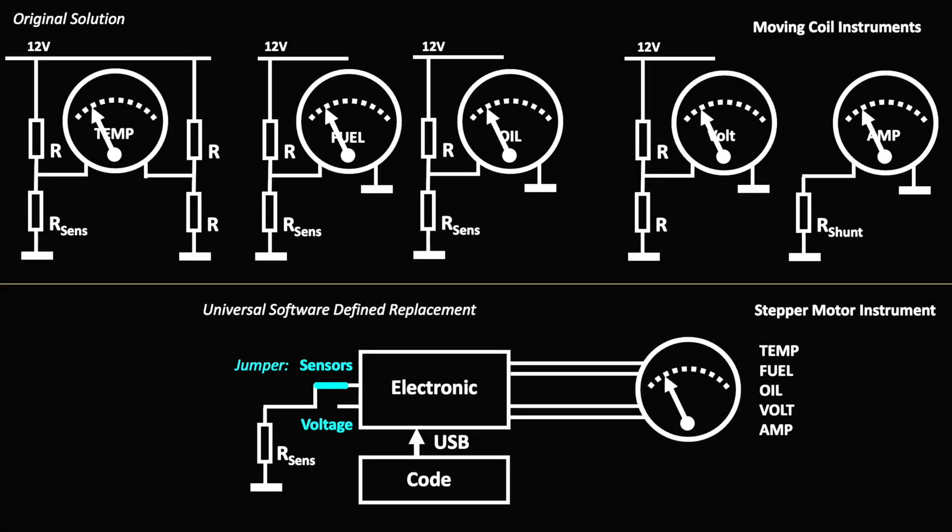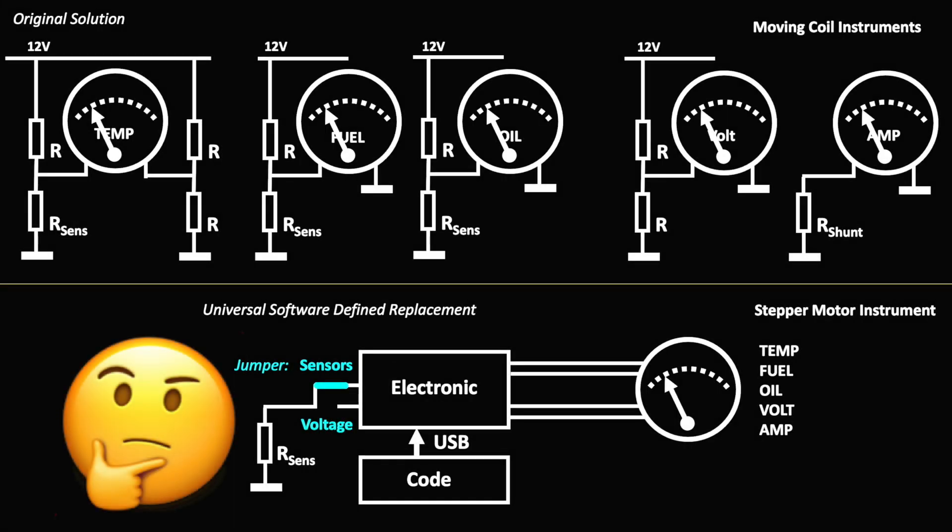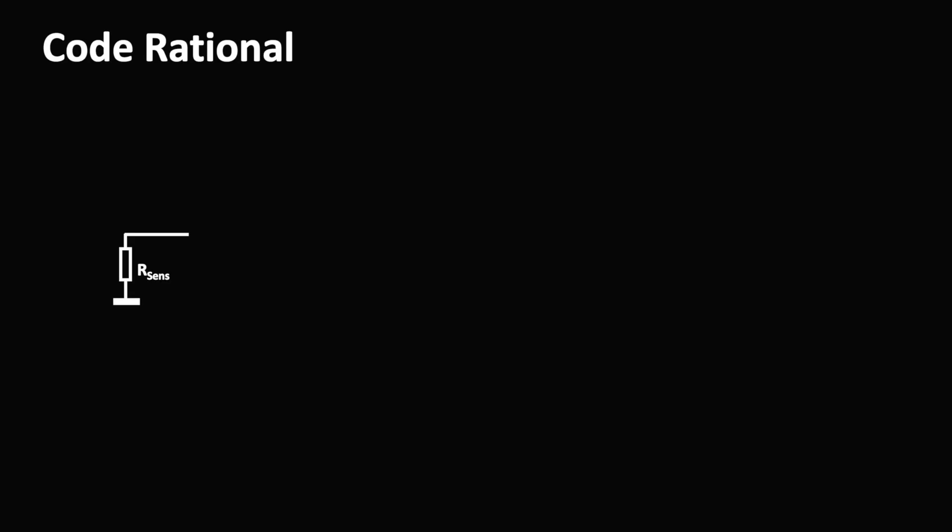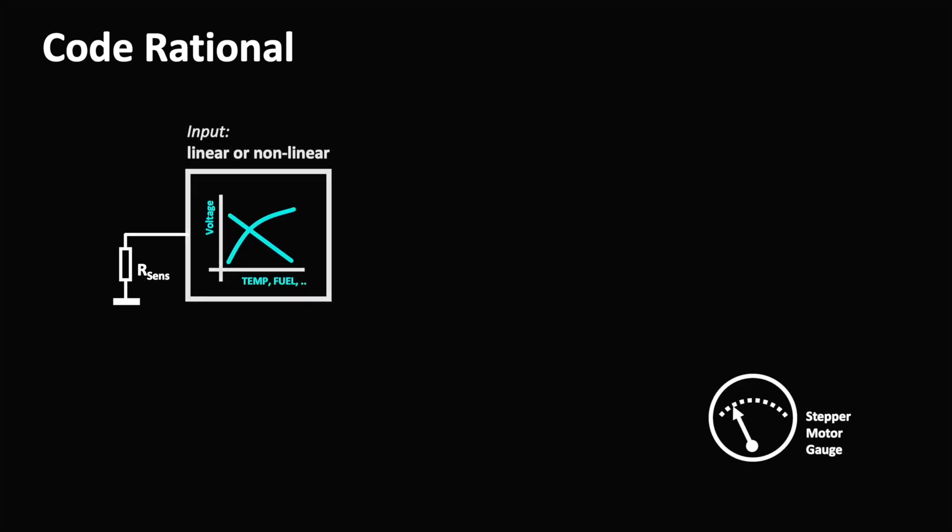How are we actually implementing all these different functions in the software? Simply put, we want to get from the voltage measured on a sensor to the stepper-driven display. Depending on the sensor's characteristics, we are getting a linear or a non-linear voltage curve over the measured range of the temperature, oil pressure, etc. From that voltage, we are computing temperature, oil pressure, etc. applying an approximation function.